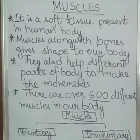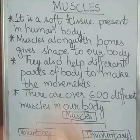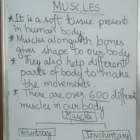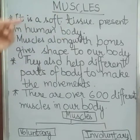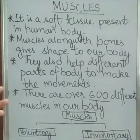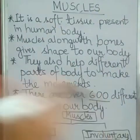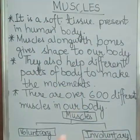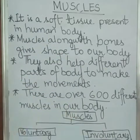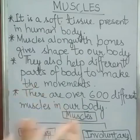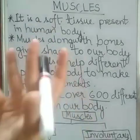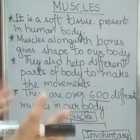Now students, I know that you all love sports — you love climbing, playing, and running. All these movements are controlled by muscles. Muscles are soft tissues present in the human body. Along with bones, they give shape to our body and help different parts of the body make movements. There are over 600 different muscles present in an adult human body.